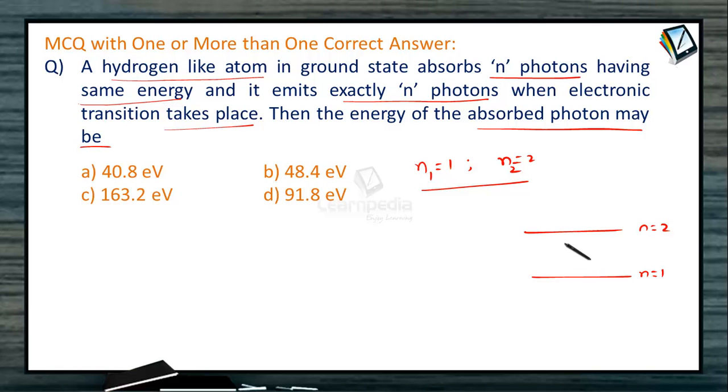Whatever energy is absorbed, the same energy will be given out when electron transition takes place. If excited to higher levels, the number of photons possible will be more than the number absorbed. Therefore, n1=1 and n2=2, but it's not hydrogen atom, it's hydrogen-like species.